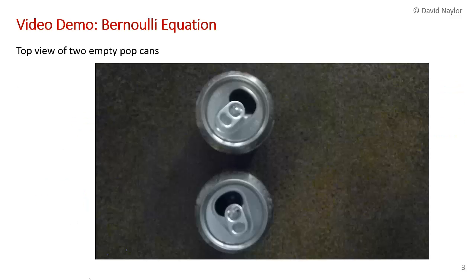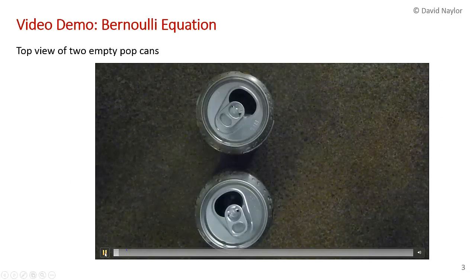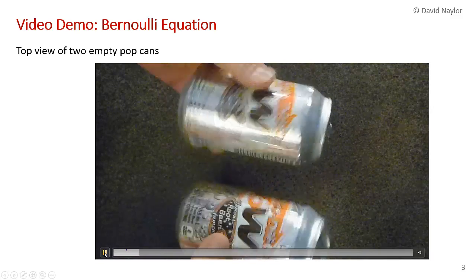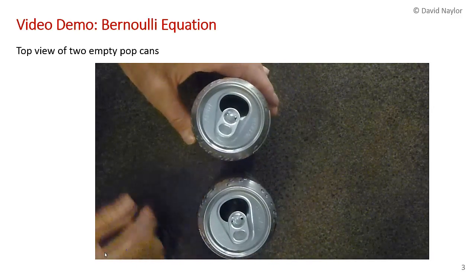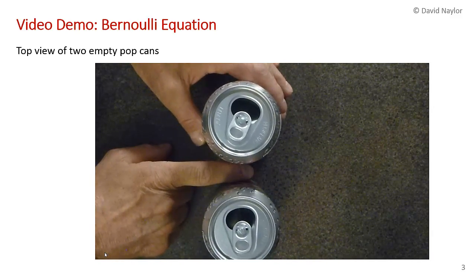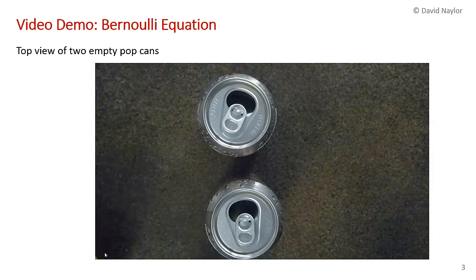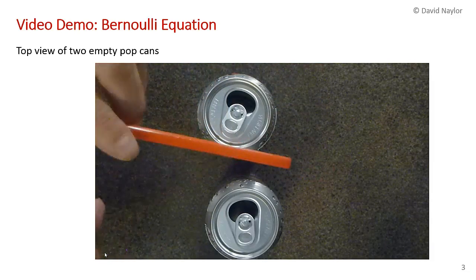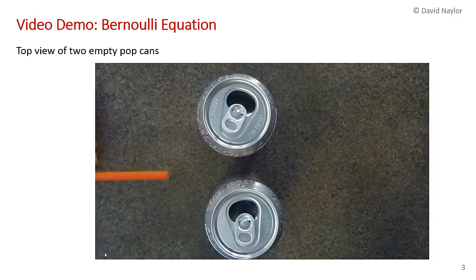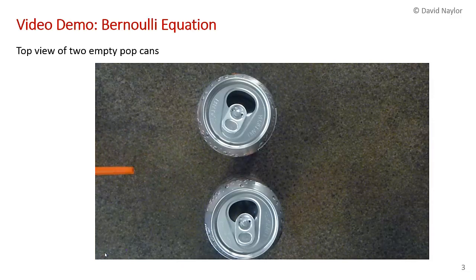So now let me show the video. What it involves is a couple of pop cans and a straw, a couple of empty pop cans. I'll turn the volume up so you can hear me blow between the cans. I set them about a finger width apart, and then I take a straw and blow gently at first and then slightly harder.